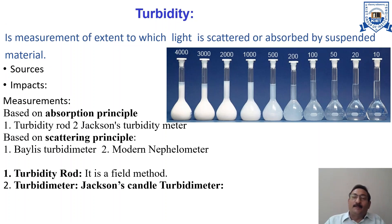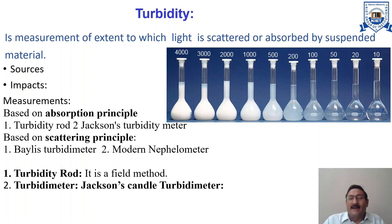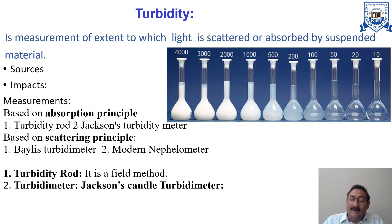The next parameter is turbidity. Turbidity is a measure of the extent to which light is either absorbed or scattered by suspended material in water. Since scattering and absorption are influenced by both the size and surface characteristics of suspended material, turbidity is not a direct quantitative measurement of suspended solids.